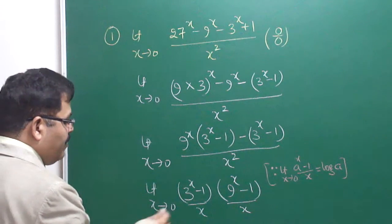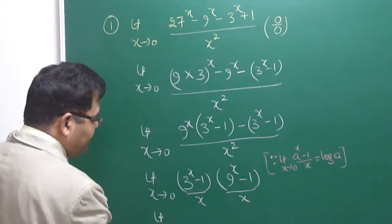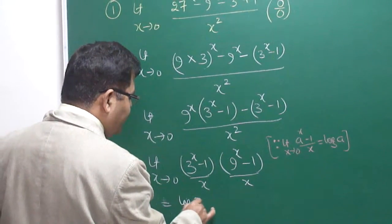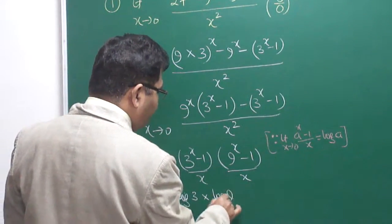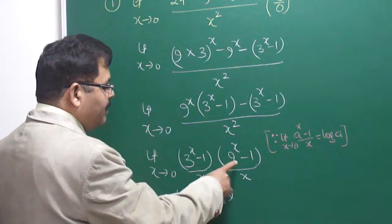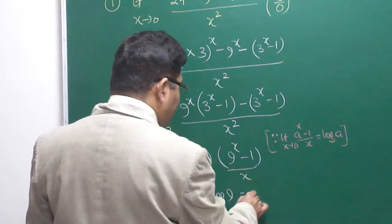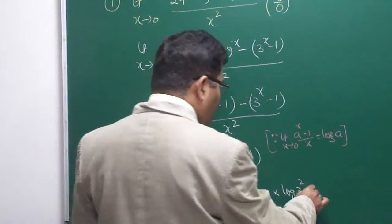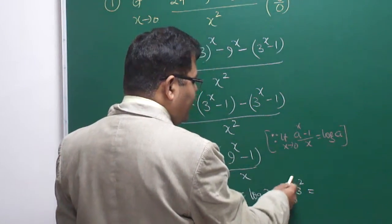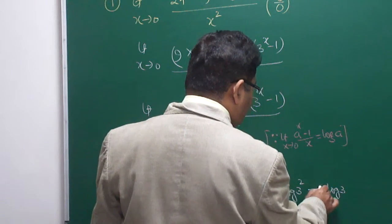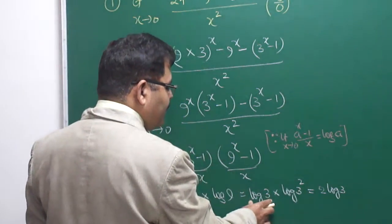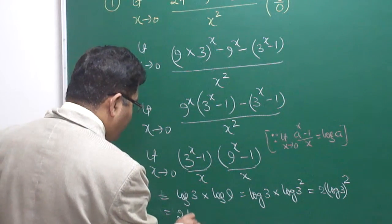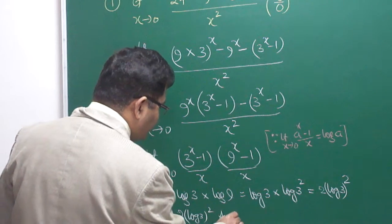We use the standard formula: limit x→0 of (a^x − 1)/x = log a. Applying this formula, the first factor gives log 3 and the second gives log 9. Since log 9 = log 3² = 2 log 3, the answer becomes log 3 · 2 log 3 = 2(log 3)².